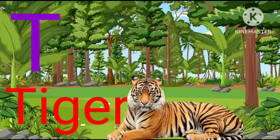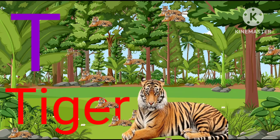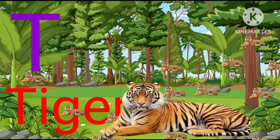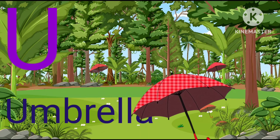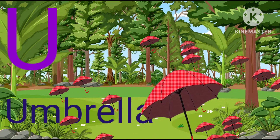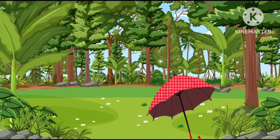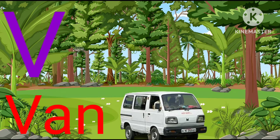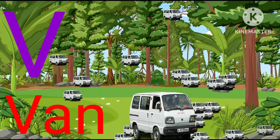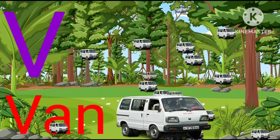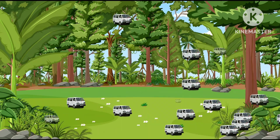T for tiger, tiger means bug. U for umbrella, umbrella means chata. V for van, van means gari.